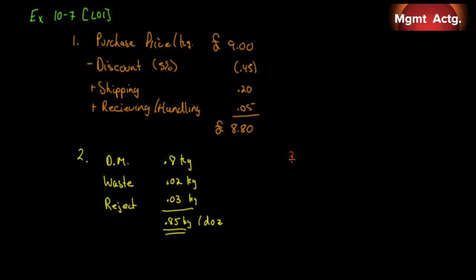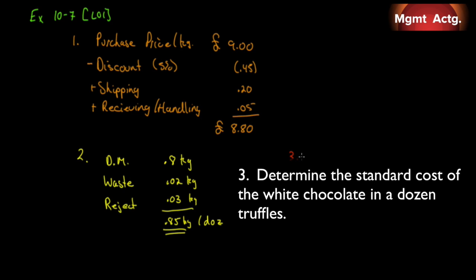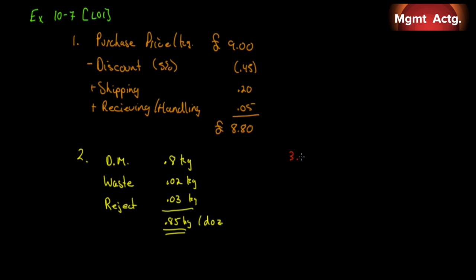And finally, number three. Determine the standard cost of the white chocolate in a dozen truffles. So the standard cost for the entire amount is our standard price times our standard quantity. And our standard price we've determined was $8.80 times our standard quantity is 0.85 kilograms. Multiply that out, we get $7.48 per dozen. This is our standard cost. Standard price times standard quantity per dozen. That is exercise 10-7.